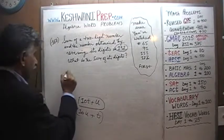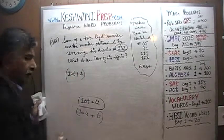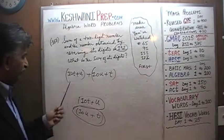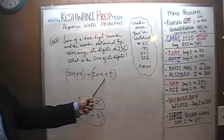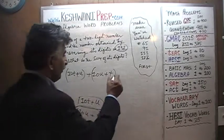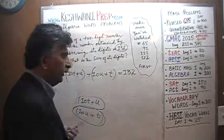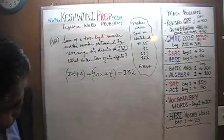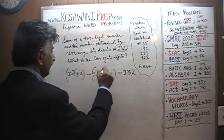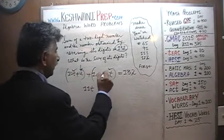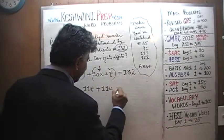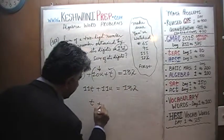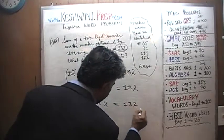So the original quantity is 10T plus U, and when we reverse the digits it becomes 10U plus T, and their sum equals 132. We can simplify: 10T plus T is 11T, and 10U plus U is 11U, giving us 11T plus 11U equals 132. Divide the entire equation by 11 and we find that T plus U equals 132 divided by 11.